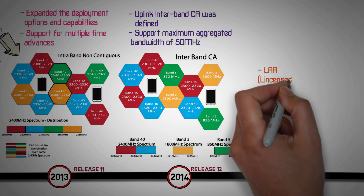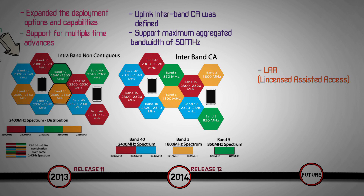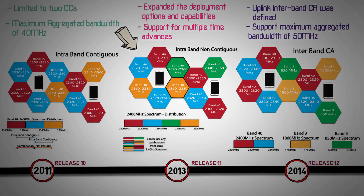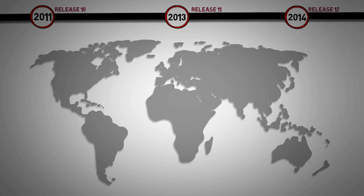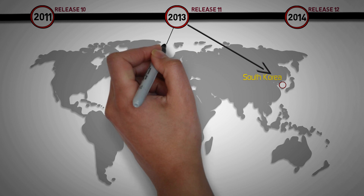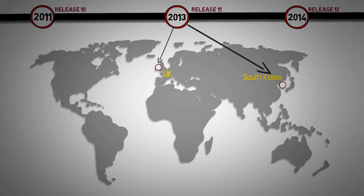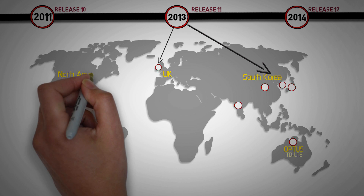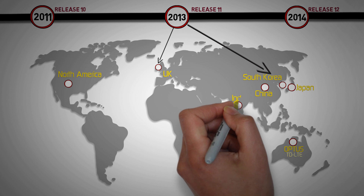In future releases, licensed assisted access and 4 downlink carrier aggregation have been planned. In 2013, the first commercial implementation of CA was deployed in South Korea, followed by the UK. Australian mobile operator Optus was the first to deploy CA on a TDD LTE network. CA technology has since been deployed on LTE networks throughout the world, notably in North America, Japan, China, and India.